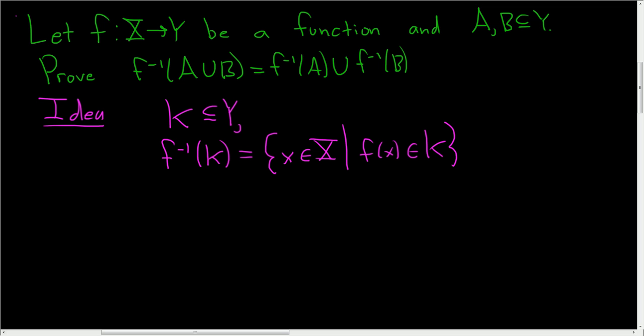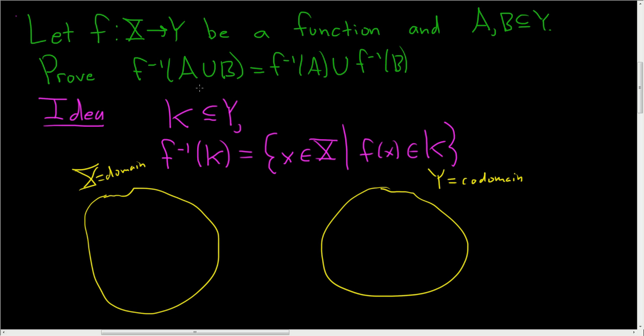Let's look at a picture to see if it will help with the understanding a bit. So this is capital X, this is called the domain. And this here will be capital Y, this is called the codomain. And we're being told that capital K is a subset of Y. So maybe this is capital K.